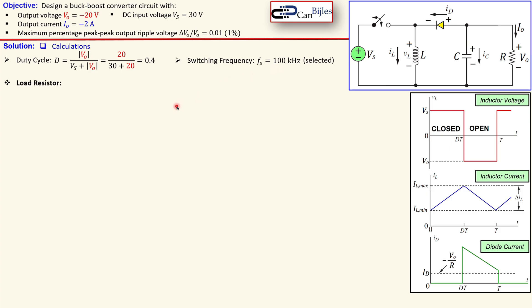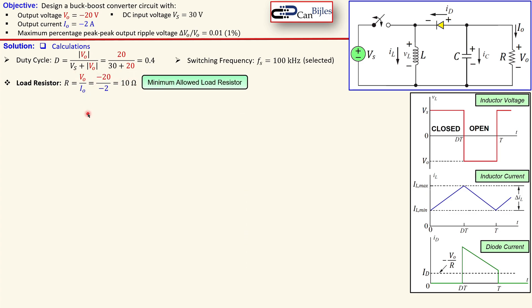The load resistor is important — looking at the specifications to find the minimum required load resistor. Using Ohm's law, output voltage over output current gives us 10 ohms. This is the minimum allowed resistor value at the load. If you go lower — say 9, 8, or 5 ohms — you require more current than what we have designed for. So 10 ohms is the minimum value for your load resistor.